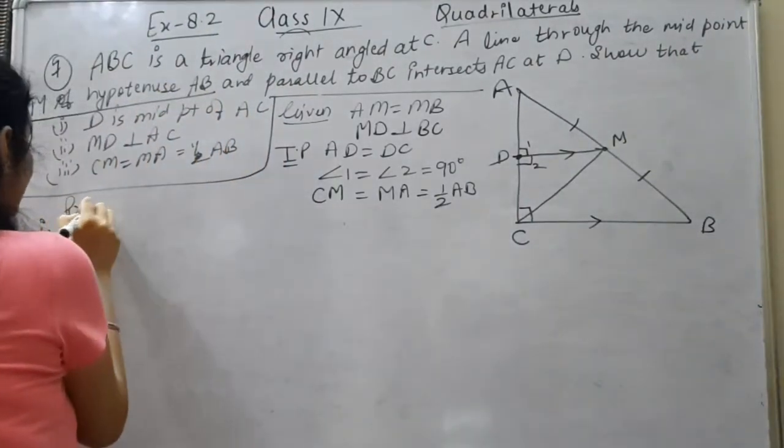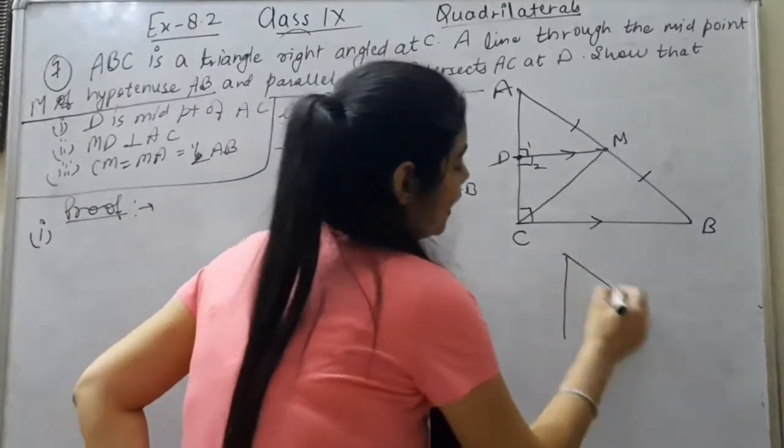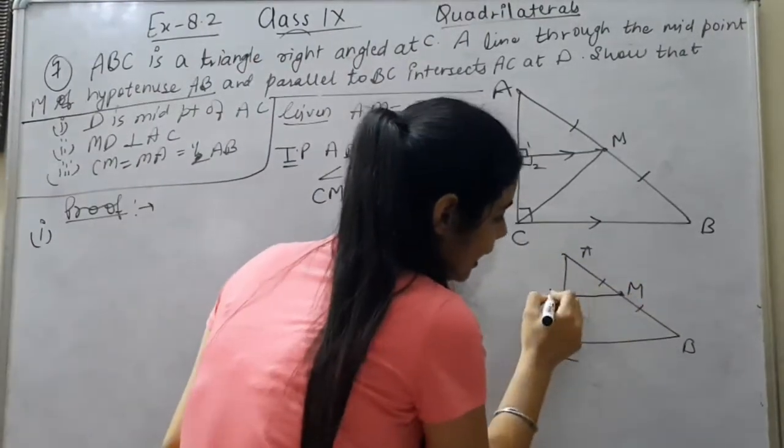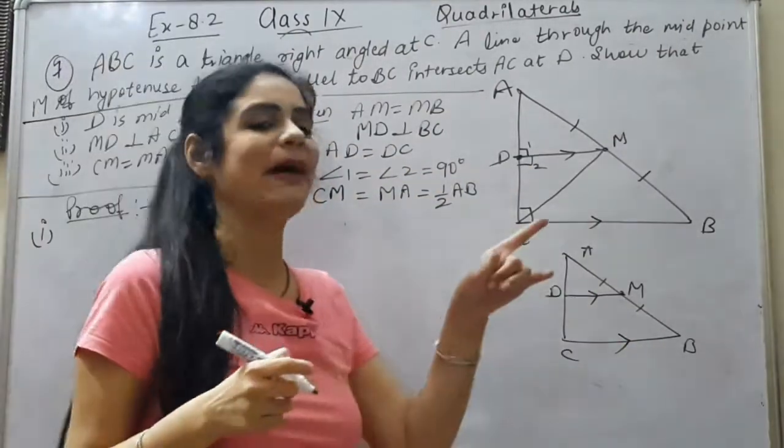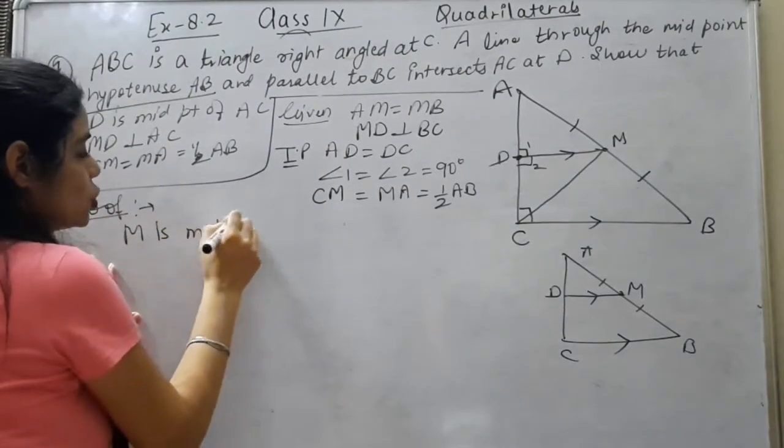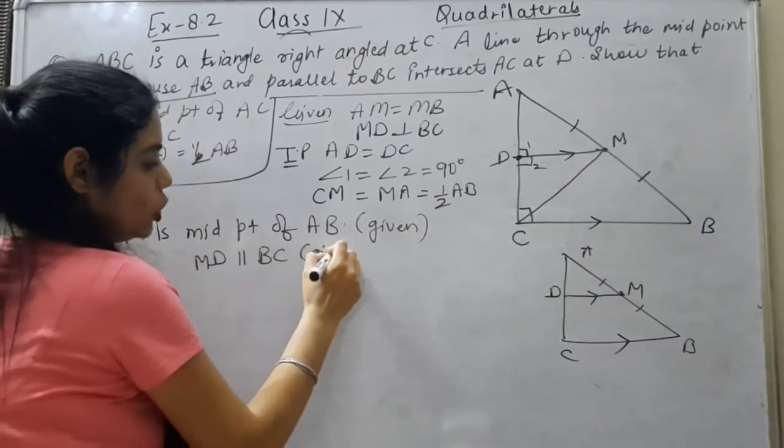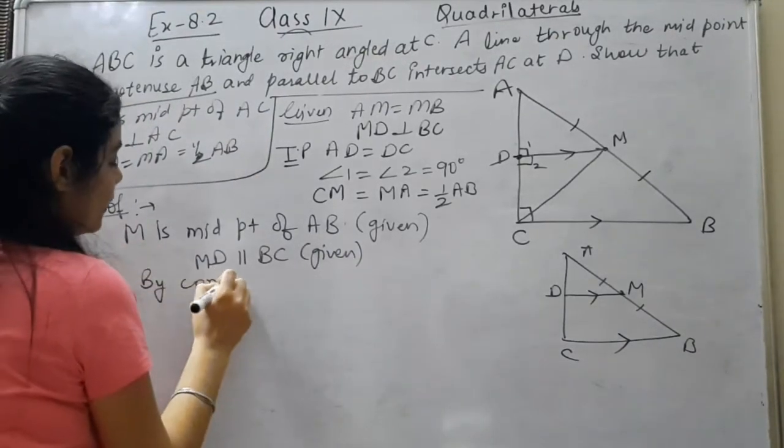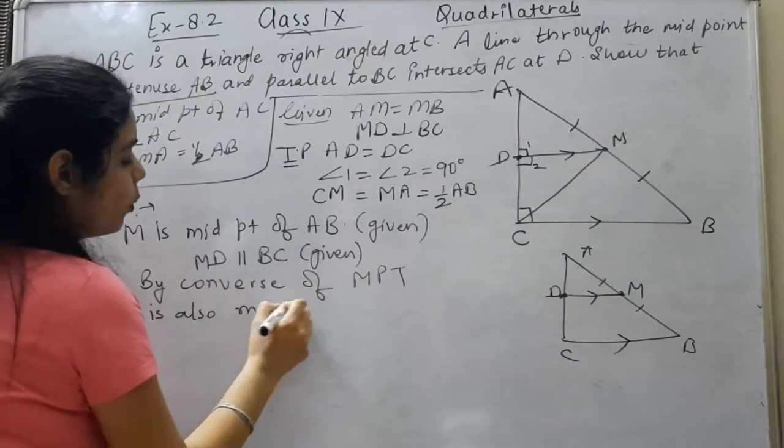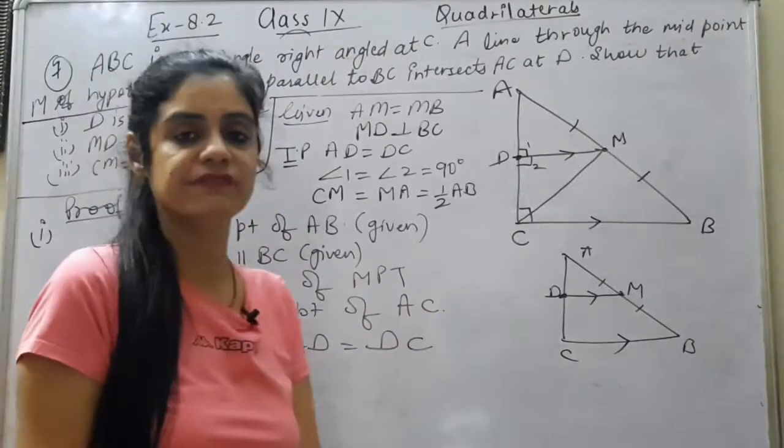Let's prove the first part. The first part is very easy, which is AD equals DC. This is my triangle. This is the midpoint given. When this is the midpoint given and this is also given, that this is parallel, so one midpoint, one parallel line given, will it be converse of midpoint theorem? It will be converse. So what do we write? M is the midpoint of AB, which is given. MD is parallel to BC given. Therefore by converse of MPT, D is also the midpoint of AC. Therefore AD equals DC. This is my first part, straight converse of MPT.